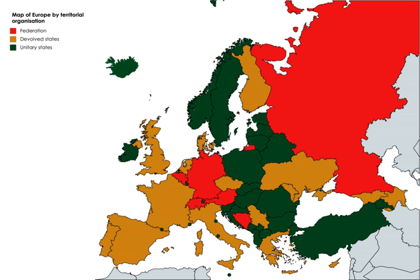Although South Africa bears some elements of a federal system, such as the allocation of certain powers to provinces, it is nevertheless constitutionally and functionally a unitary state. Several federal systems exist in Europe, such as in Switzerland, Austria, Germany, Belgium, Bosnia and Herzegovina and the European Union. In Britain, an imperial federation was once seen as a method of solving the Home Rule problem in Ireland. Federalism has long been proposed as a solution to the Irish problem, and more lately, to the West Lothian question.